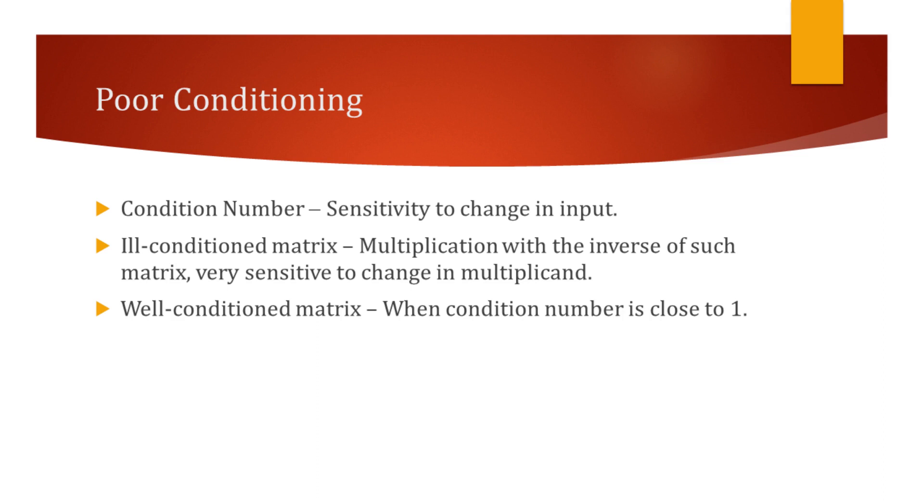A matrix is said to be ill-conditioned when its condition number is significantly greater than 1. And it is said to be well-conditioned when the condition number is close to 1.